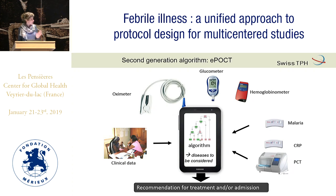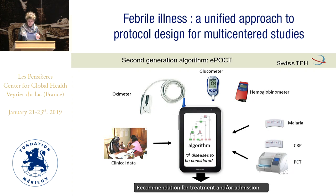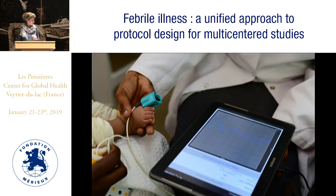EPoCT is a tablet with the algorithm where we have added severity tests: the oximeter, glucometer, hemoglobin, etc., because these are predictors of bacterial disease, serious disease, and need for referral to hospital. For pneumonia, we use CRP greater than 80 to give antibiotics, and for unspecific fever we were using PCT with a threshold of 2. Based on that, recommendations for treatment or admission are generated. The oximeter is directly plugged into the tablet so the result feeds the algorithm.